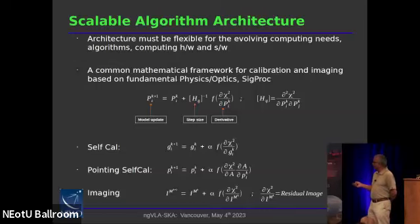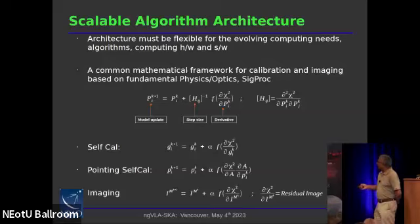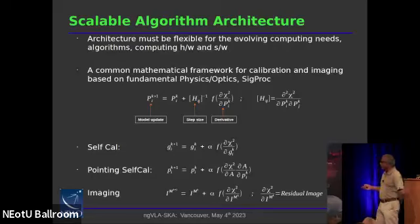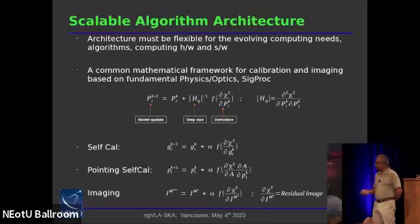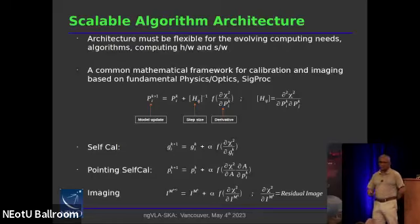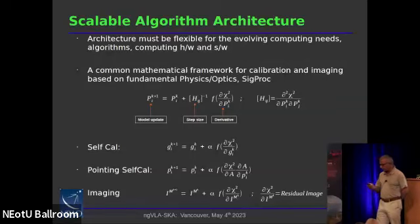We need an algorithmic architecture that is flexible for evolving computing needs. Most successful algorithms at the core of telescopes are based on iterative chi-square minimization, which requires three major computing pieces: derivative calculation (the major cycle in radio astronomy jargon), calculation of the step size needed to descend the chi-square surface, and parameter updates. This system can deliver self-calibration, imaging algorithms, direction-dependent corrections, and all related tasks — making it a flexible algorithmic architecture.